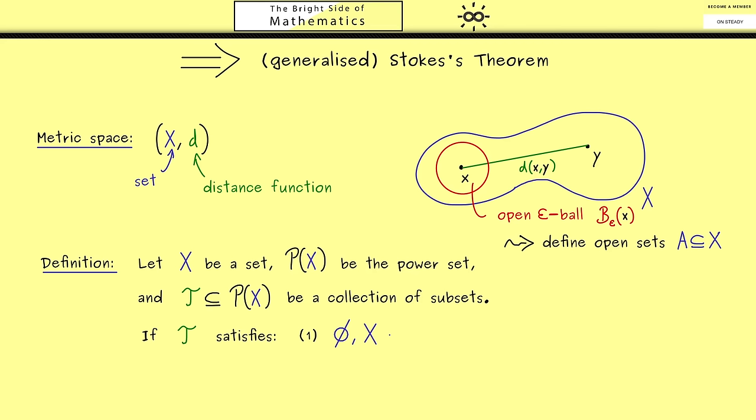Then the second property I already mentioned. If we take two open sets A and B, then this implies that the intersection is also an open set.